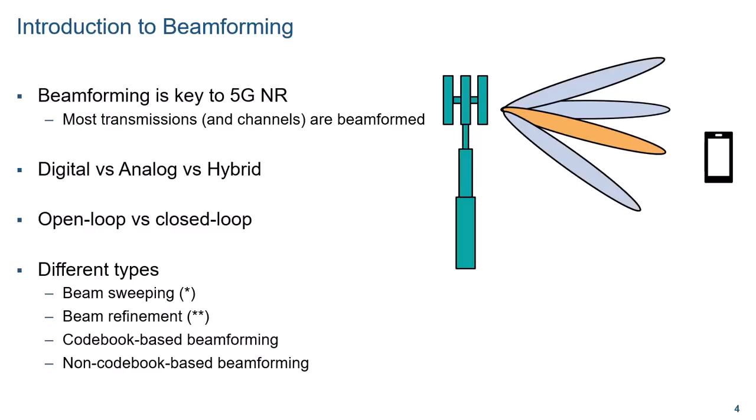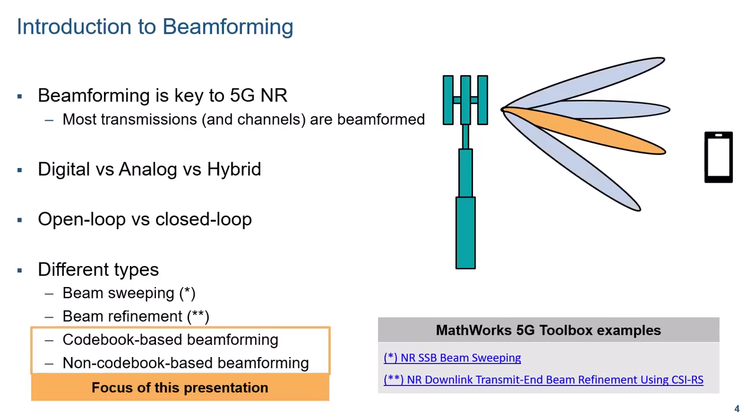Another way to classify beamforming is between open loop and closed loop schemes. For example, beam sweeping, which consists in following a set pattern to transmit a beam in different directions to cover a sector, is an open loop scheme. Other schemes such as codebook-based beamforming are closed loop because they require feedback from the UE to the base station to determine a suitable downlink beam. In this presentation we'll be focusing on codebook and non-codebook-based beamforming.